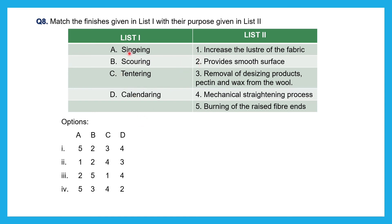Based on the matches identified, the answer combination is five, three, four, two. To summarize: singeing is the burning of raised fiber ends; scouring is the removal of desizing products, pectin, and wax from wool; tentering is a mechanical straightening process; and calendaring is the process that gives the fabric a smooth surface.